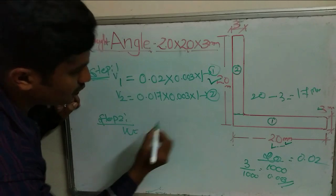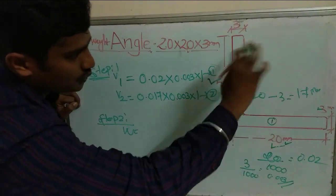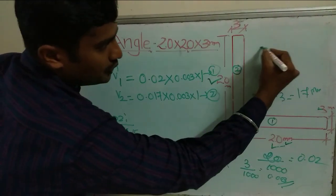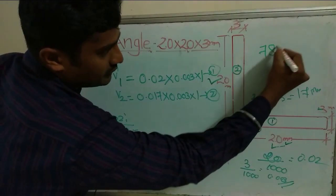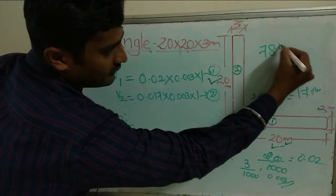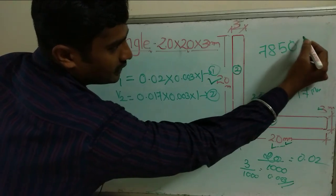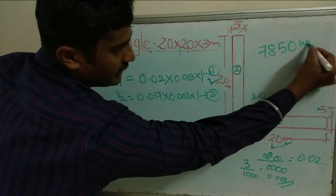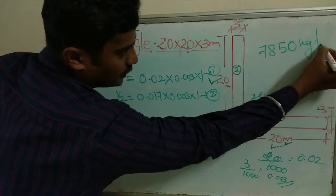Weight equals Volume 1 plus Volume 2, multiplied by the unit weight of steel. The unit weight of steel is 7850 kg per cubic meter.